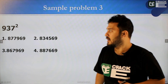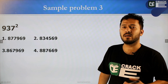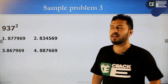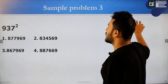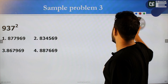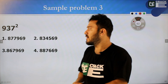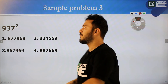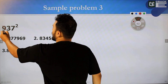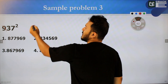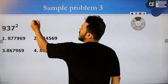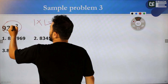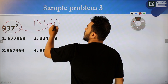937 squared — this is 3 steps. We will apply digit sum. 937: 9 is eliminated. The remaining digit sum is 1. Direct digit height is 1. So digit sum is 1. If we have options, we take the digit sum of each option.